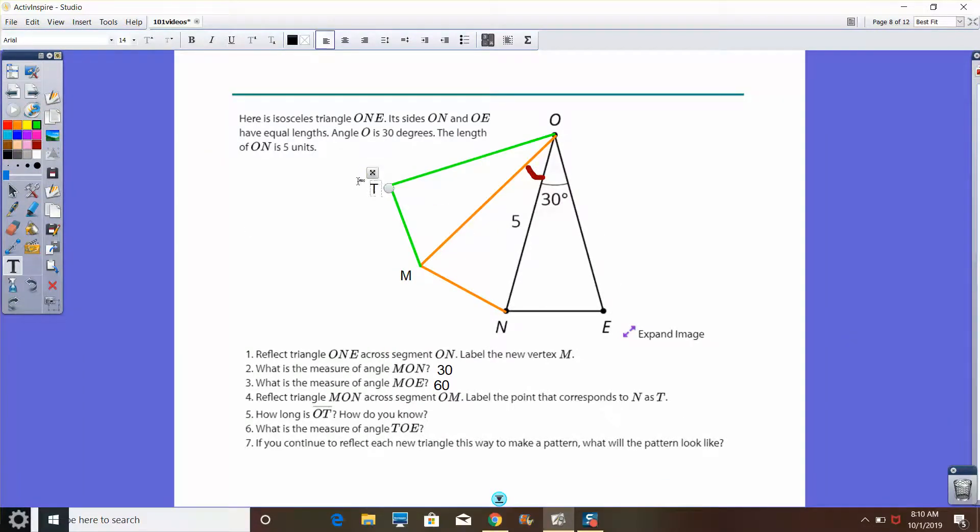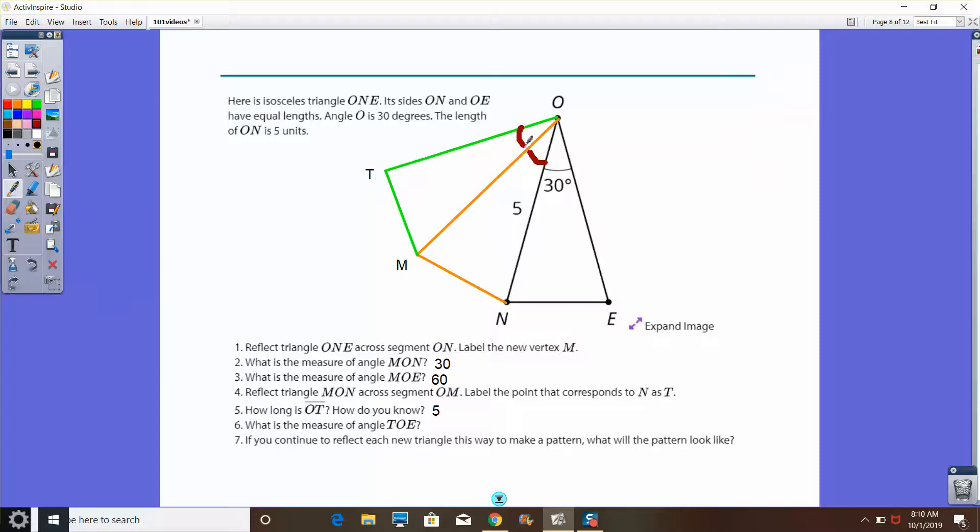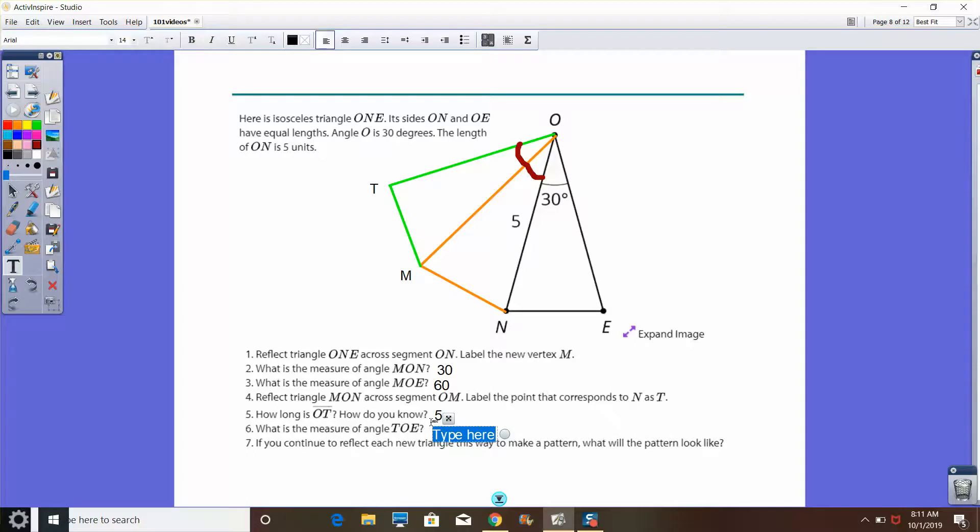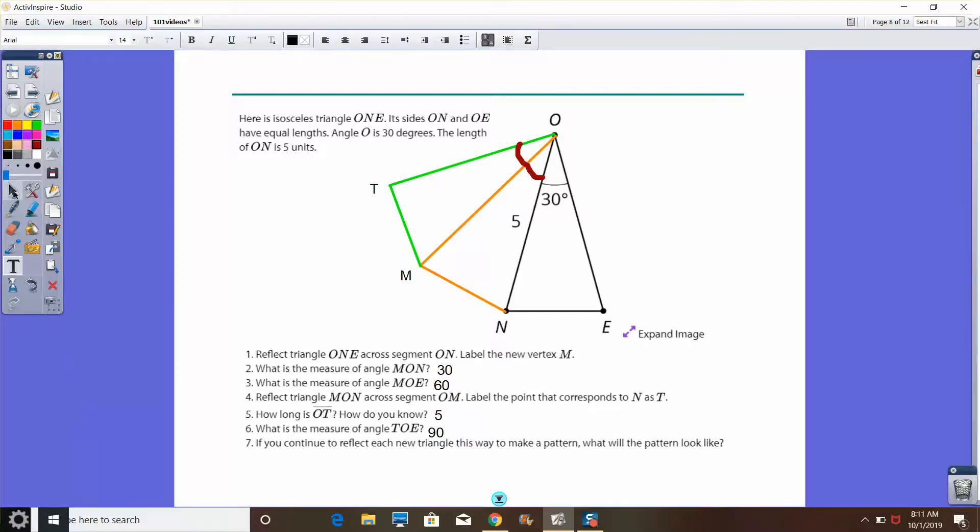How long is OT? Well, this is a rigid transformation of a rigid transformation. So OT should be five units long. Because you had performed two rigid transformations. What is the measure of angle TOE? It should be 90 degrees. And I'm looking back at my reason why it doesn't work out that way in my drawing, but it should be 90 degrees. Not to scale, but 30, 30, and 30 does equal 90. And if you continue to reflect the triangle in this way, what will the pattern look like?